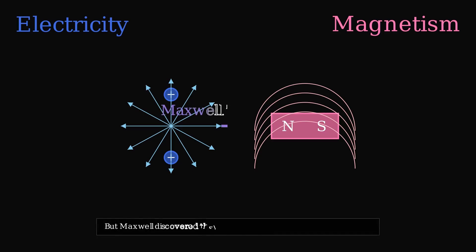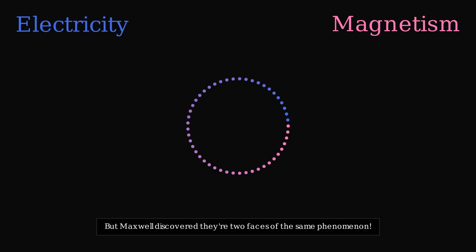On the other side, magnetism, with magnetic fields forming loops around magnets. But Maxwell discovered they're two faces of the same phenomenon. This discovery revolutionized our understanding of nature itself.